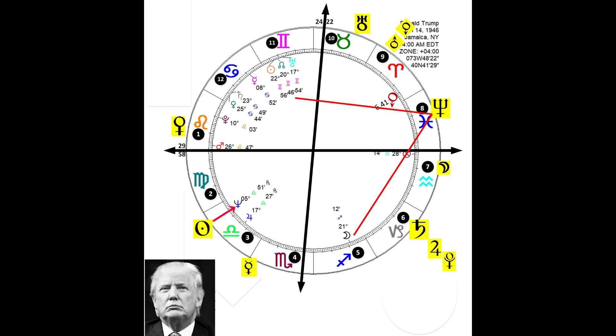Neptune is also the co-ruler of his 8th house as well, House of Taxes, and it is the most dynamically dangerous planet in its chart by opposing Eris and squaring Mercury.